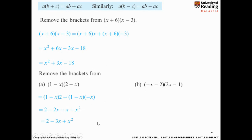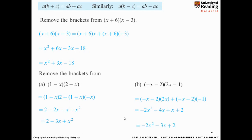Next, please pause again and see whether you can expand this. When you've completed it, let's check the answer. You need not do every intermediate step — multiply and simplify, and your final answer shall be minus 2x squared minus 3x plus 2.